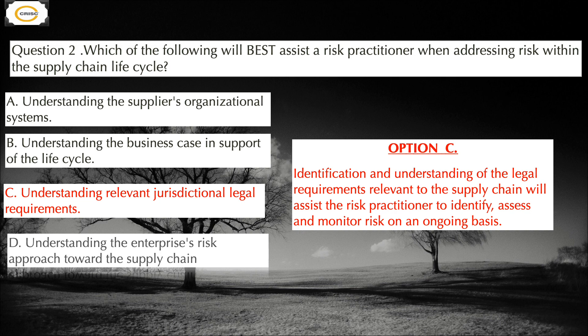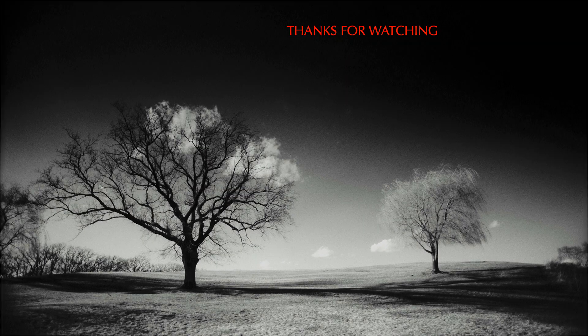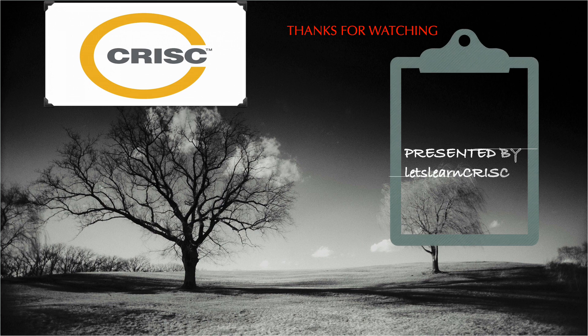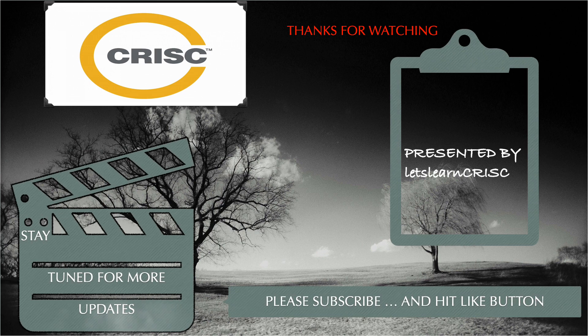Option D is incorrect because while the enterprise risk approach toward the supply chain is important, understanding the relevant jurisdictional legal requirements is more important when conducting business across different regions. That's why option C is correct. Thank you for watching — please do subscribe to our channel and stay tuned for more updates.